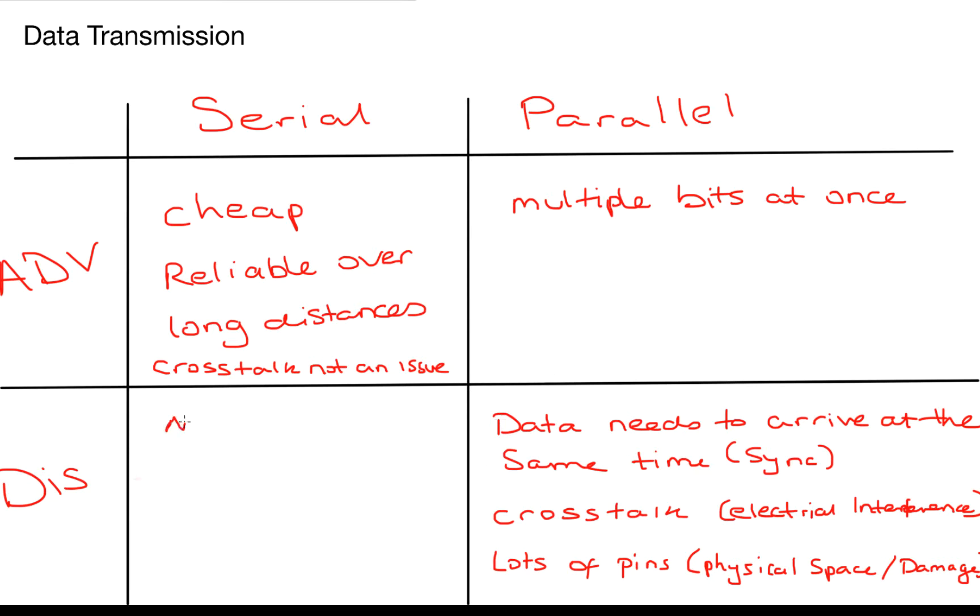For serial disadvantages there's not that many at all. You could say that serial transmission is slower in the short term whereas parallel can send multiple bits quite quickly at one time. Okay so time to move on.